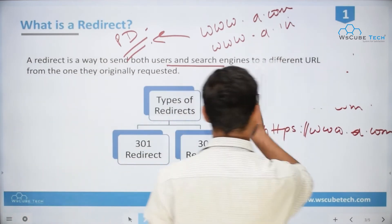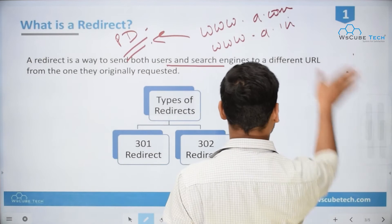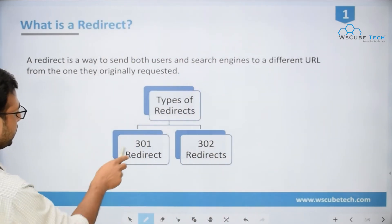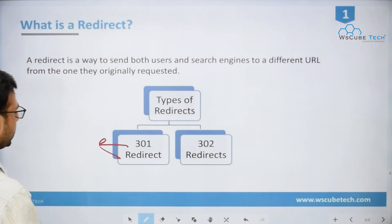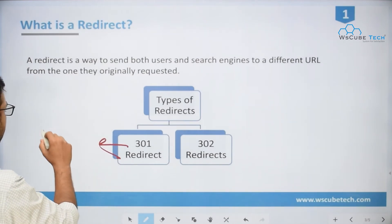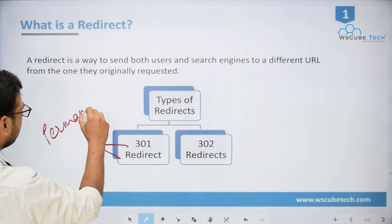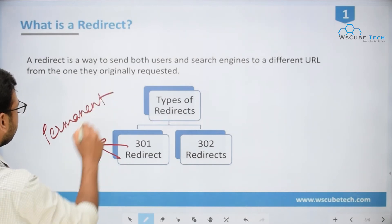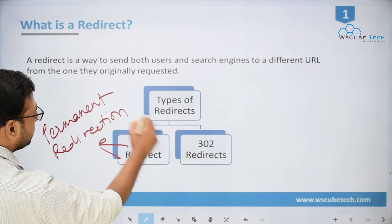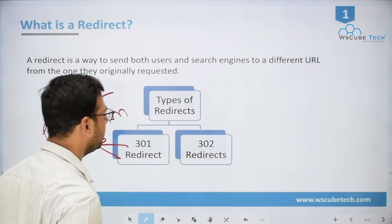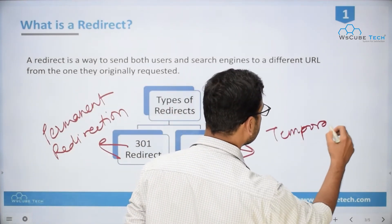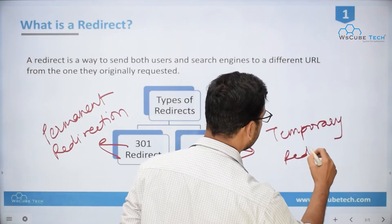There are two different types of redirects. The first is 301, also called 301 redirection — sometimes called permanent redirection. The other one is 302, or 302 redirection, which is basically temporary redirection.